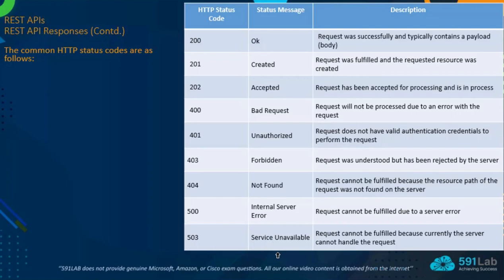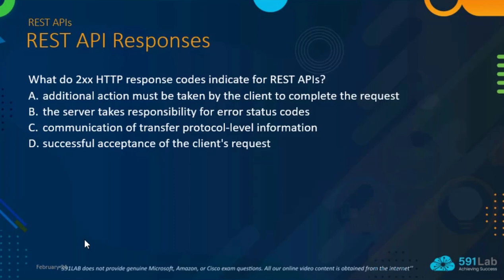Any of these responses can be a feedback to the request sent by the client or the application. Going back to our question — what are the two categories of HTTP response codes for REST APIs? We can see that option D is the correct answer: successful acceptance of the client request, based on what we've seen from our explanation.